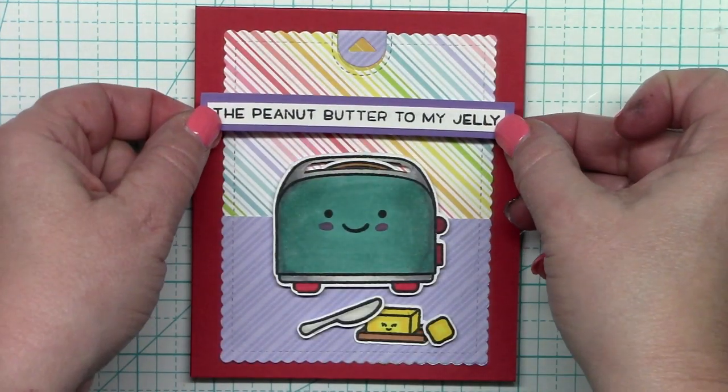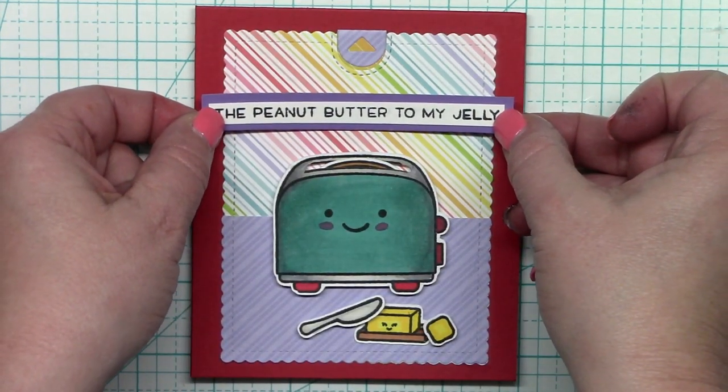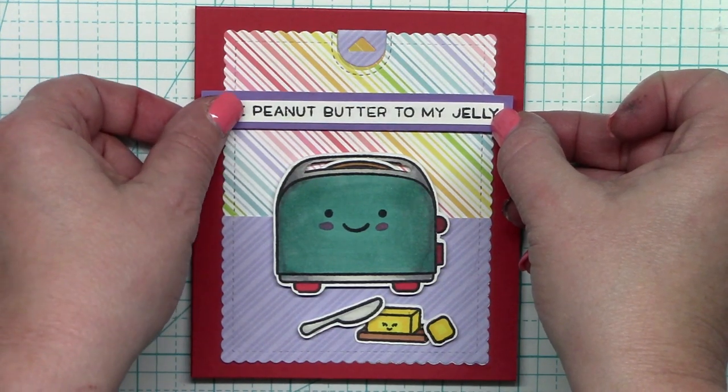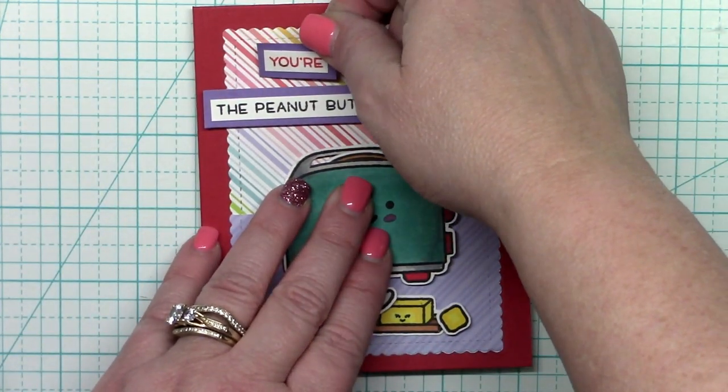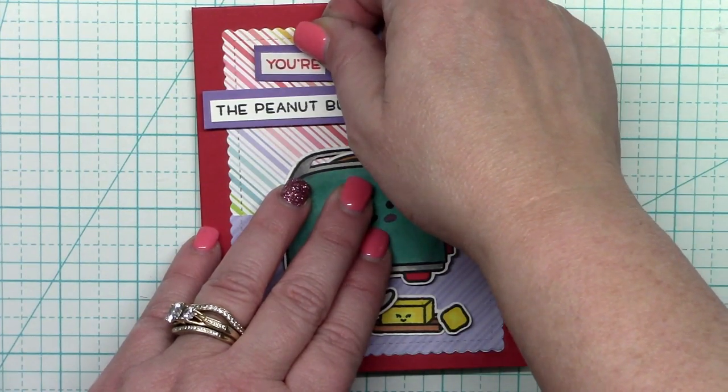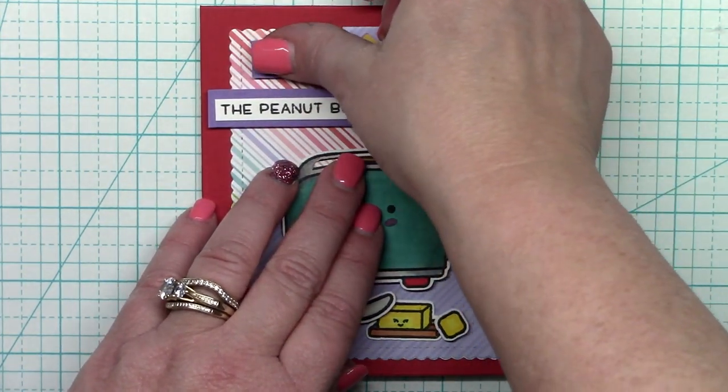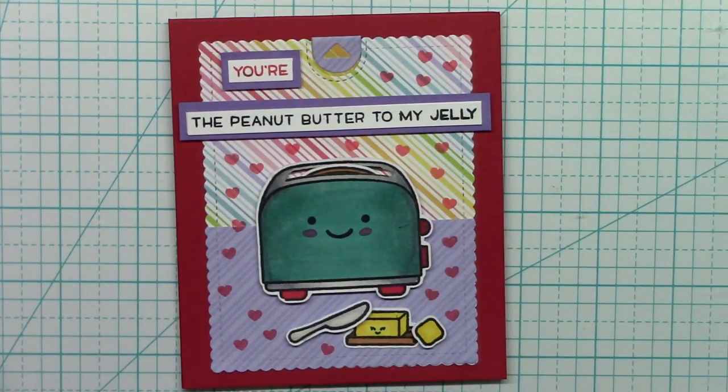And now it's time for the sentiment which says you're the peanut butter to my jelly. So this is the bottom part of the sentiment and there's the you're. And I placed both of those on foam tape. So cute. I just love this little sentiment and how cheery and happy this is.